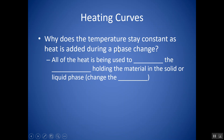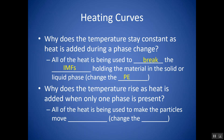Why does the temperature stay constant as heat is added during a phase change? All of the heat is being used to break the IMFs — the intermolecular forces — holding the material together in the solid or liquid phase, so it's changing the potential energy, not the kinetic energy. Why does the temperature rise as heat is added when only one phase is present? Because all of the heat is being used to make the particles move faster, and that changes the kinetic energy.